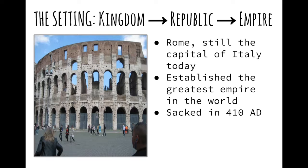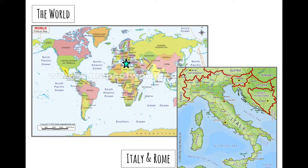The three major historical periods of ancient Rome consist of the Kingdom of Rome, the Roman Republic, and the Roman Empire. The city of Rome is still the capital of Italy today, and its people helped establish one of the most influential cultural and linguistic diasporas in the history of the world. However, all things must come to an end, and Rome officially fell in 410 AD. Let's take a look at some maps so that you know exactly where it is in the world that we are discussing.